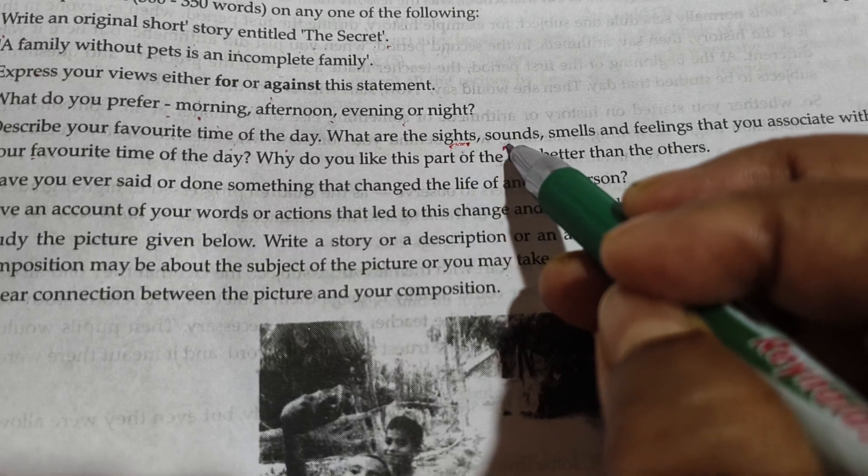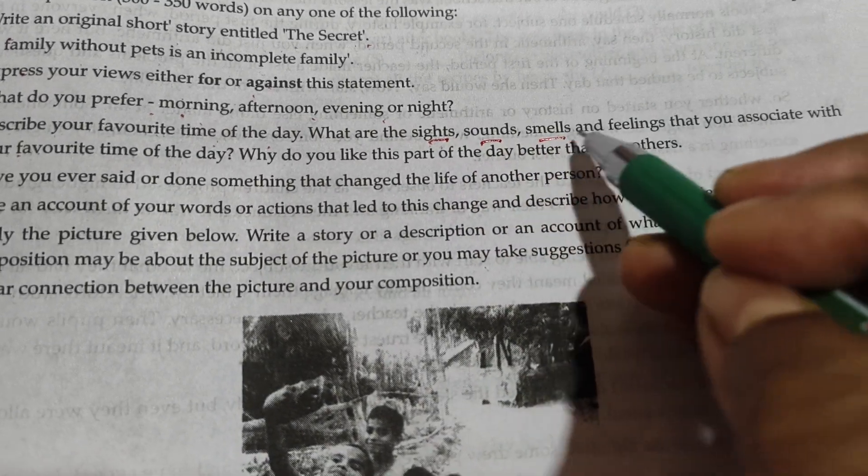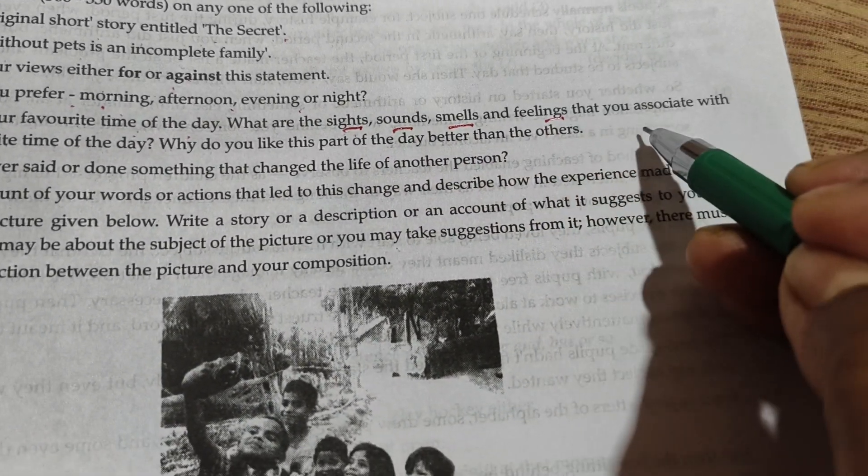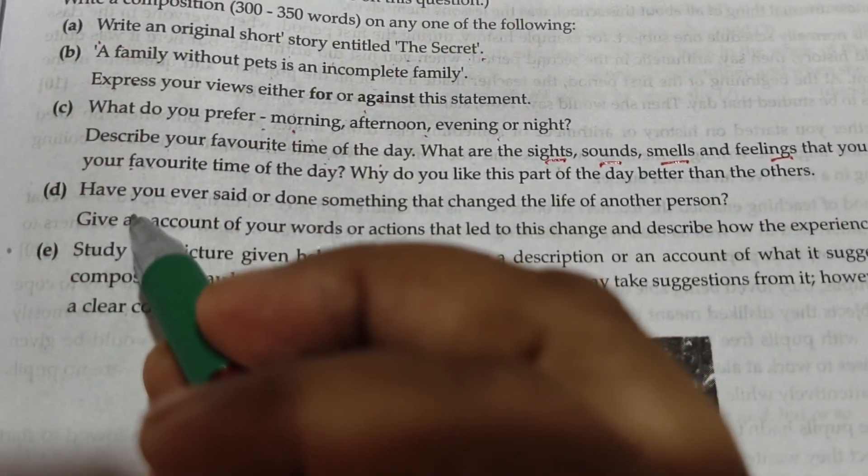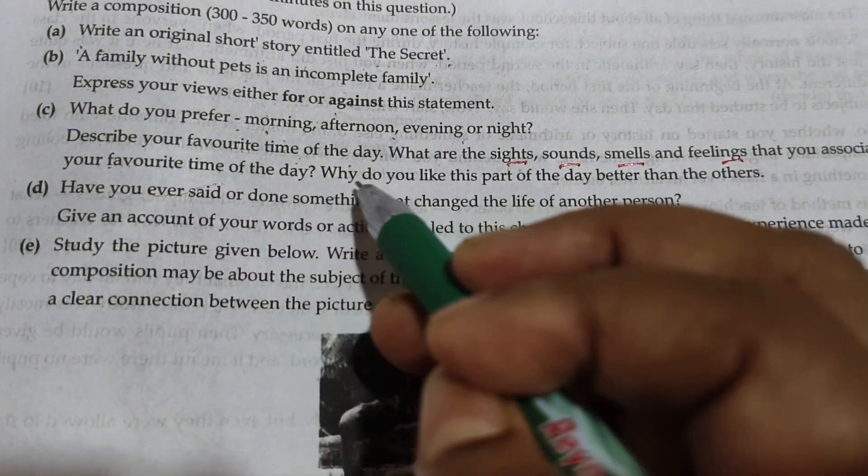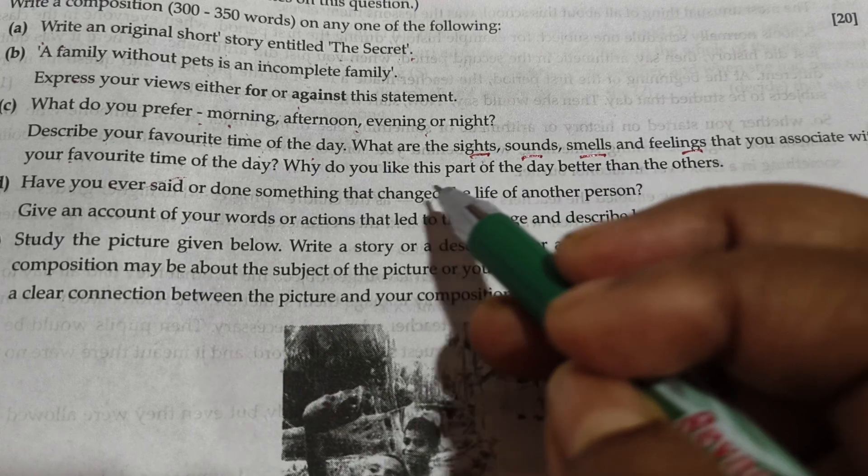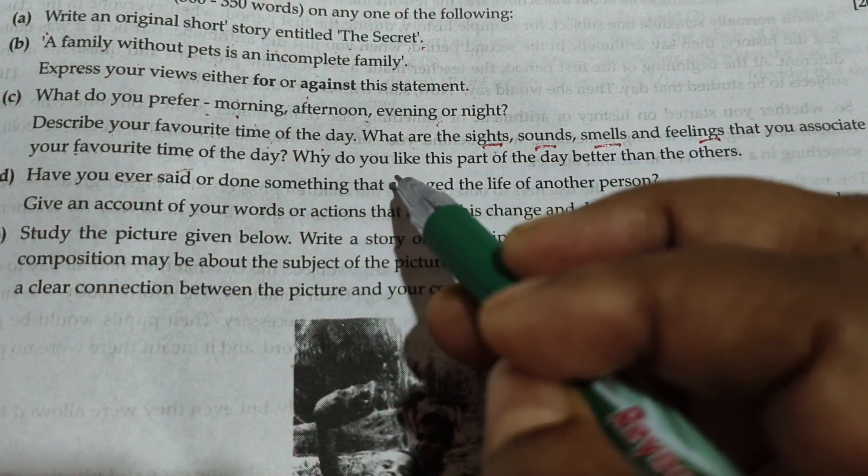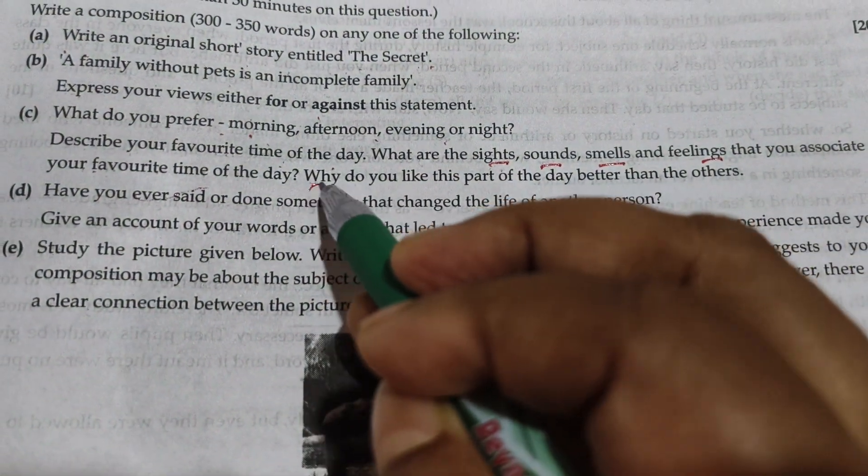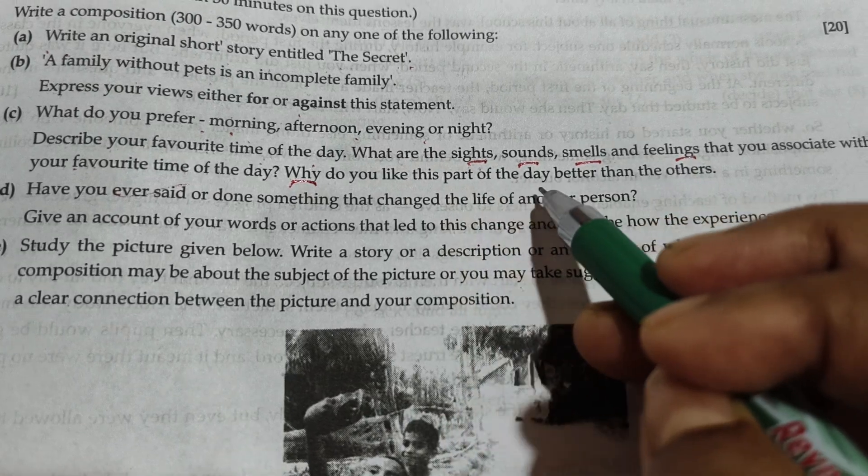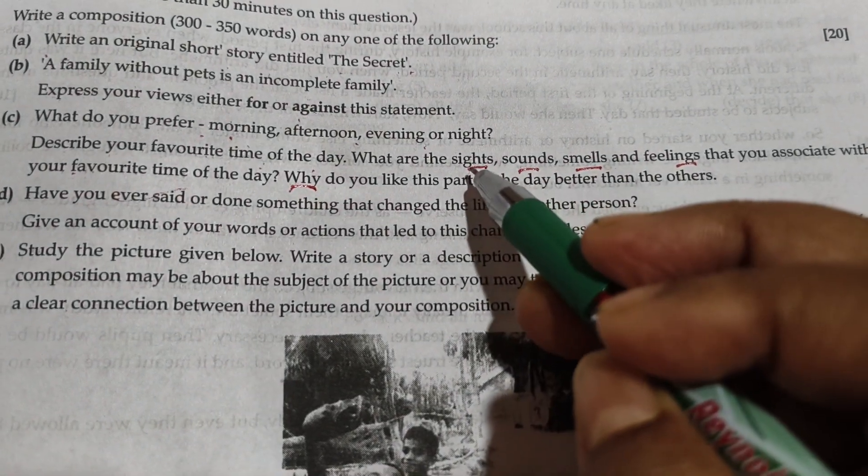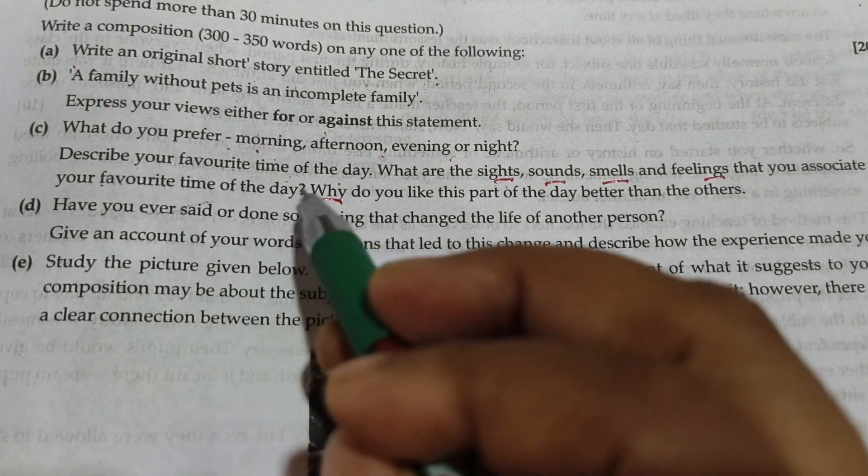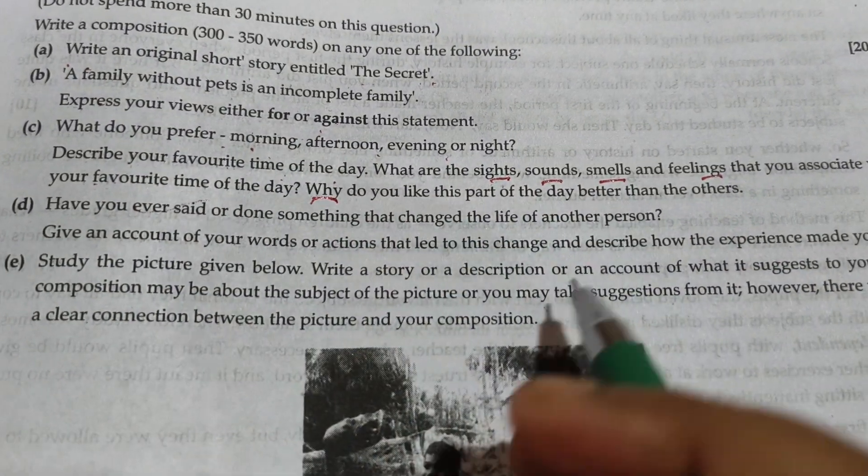Sights, number one. Sounds, number two. Smells, number three. Feelings that you have a script, number four. Your favorite time of the day. Thale, one, two, three, four points are there. Why do you, why do you like this part of the day better than other? So, you will have one, two, three, four. And shoot at the time of the day. Five points are there.